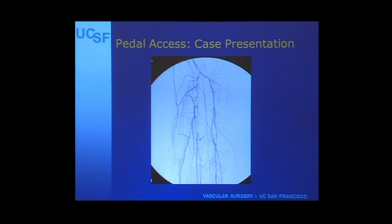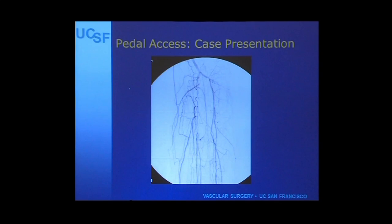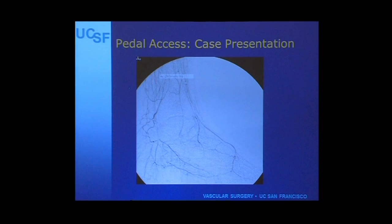Here's a case we did. These types of cases are best presented with video, but this was a gentleman who had a composite fem-distal bypass on one side and had wound complications and cardiac complications during the operative period. In his contralateral extremity he developed gangrene of digits 3 through 5. We were committed to an endovascular intervention. He had chronic total occlusions of all three tibials just below the trifurcation, with collateralization into the foot, a patent dorsalis pedis artery, a patent plantar arch, and patent plantar medial and lateral filling retrograde.